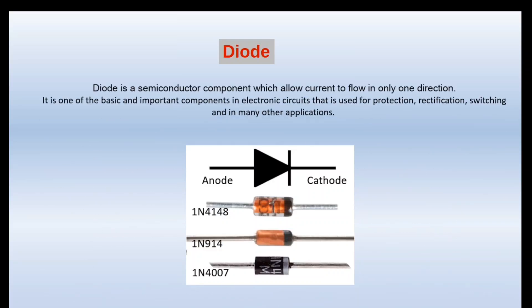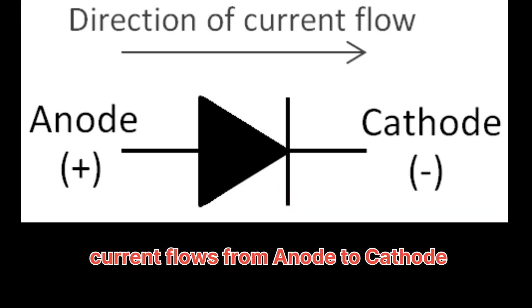In this video lecture, we are going to learn about diodes. A diode is a semiconductor component which allows current to flow only in one direction. Current flows from anode to cathode only.